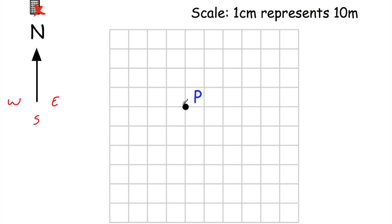Get your ruler and measure three centimeters — this is a one centimeter grid, so you count three squares up. Three centimeters would be here, so that means point A is here. A is 30 meters north of P, and on our diagram it would be three centimeters above P.